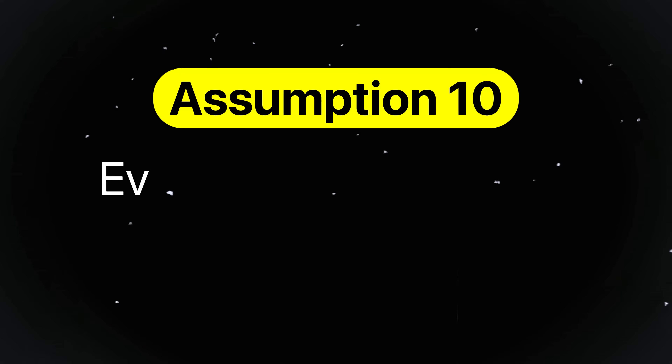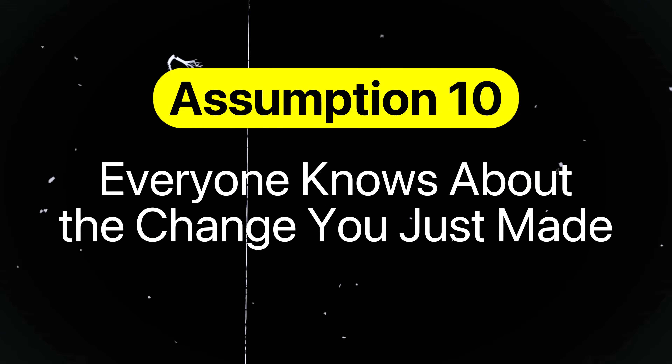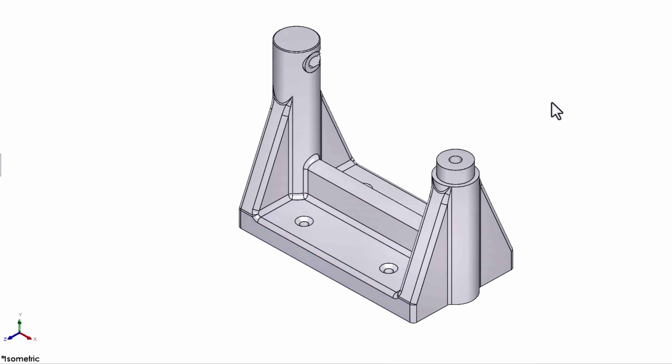Assumption number ten is everyone else knows about the change you just made. Design change management is where many teams fail. Changing a part in an assembly without notifying others can lead to a disastrous outcome — imagine resizing several mounting holes and forgetting that the test fixture uses the old hole pattern, or changing the material thickness of an enclosure and forgetting to let electrical engineers adjust the PCB size and move around components. Any type of change, big or small, needs to be documented, communicated, and tracked across all stakeholders.